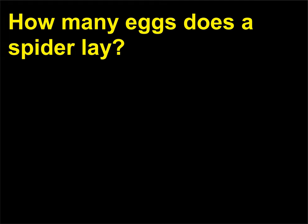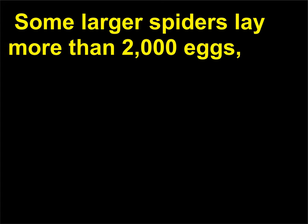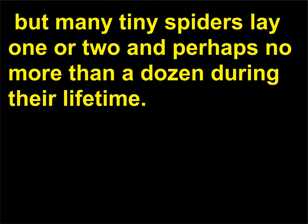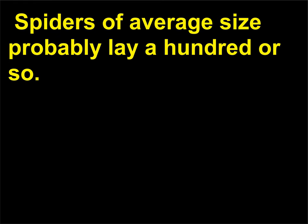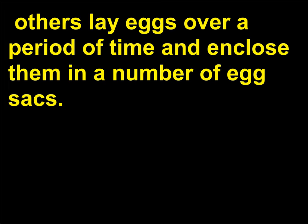How many eggs does a spider lay? Some larger spiders lay more than 2,000 eggs, but many tiny spiders lay one or two and perhaps no more than a dozen during their lifetime. Spiders of average size probably lay a hundred or so. Most spiders lay all their eggs at one time and enclose them in a single egg sack. Others lay eggs over a period of time and enclose them in a number of egg sacks.